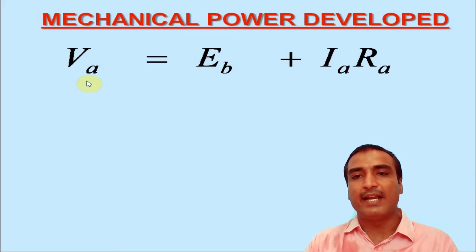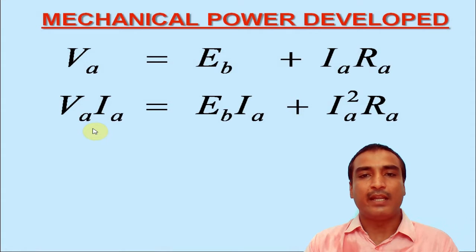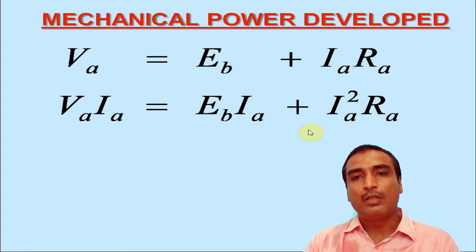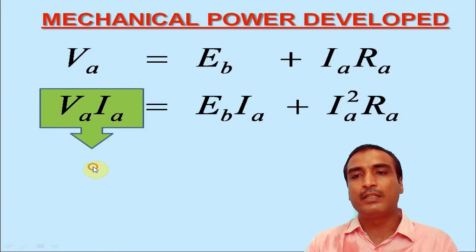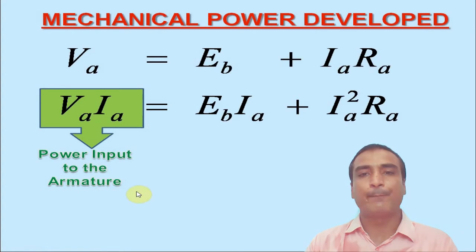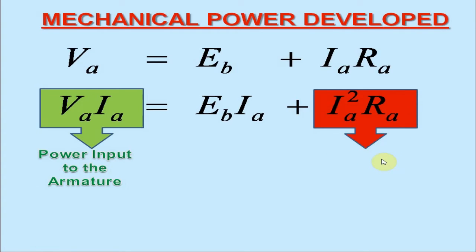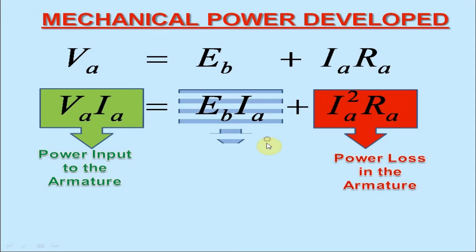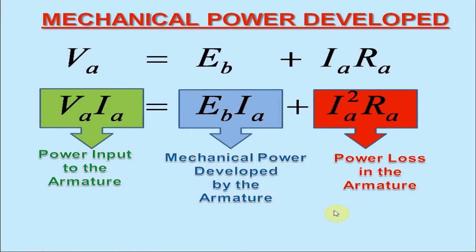Upon multiplying both sides by IA, we have VA IA is equal to EB IA plus IA square RA. Now, recall the first term in this equation is nothing but the power input to the armature of the DC motor, while the third term represents the power loss in the armature circuit. And therefore, the second term signifies the mechanical power developed by the armature of the DC motor.